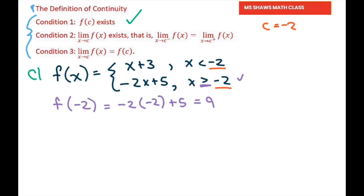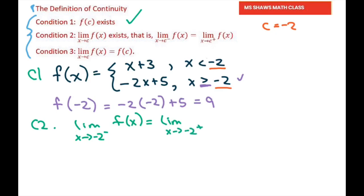Now we test condition 2, which states that the limit as x approaches negative 2 from the left must equal the limit as x approaches negative 2 from the right. From the left means all numbers less than negative 2, and from the right means all numbers greater than negative 2.